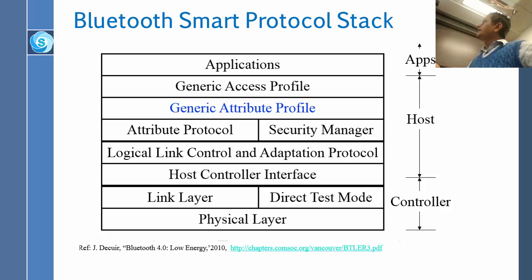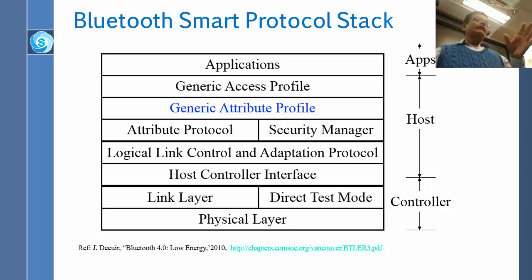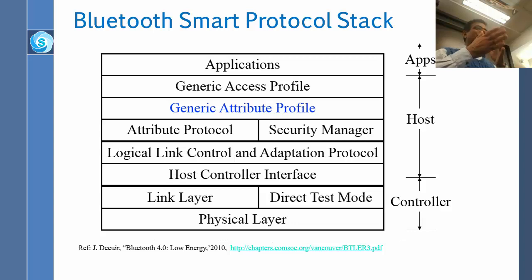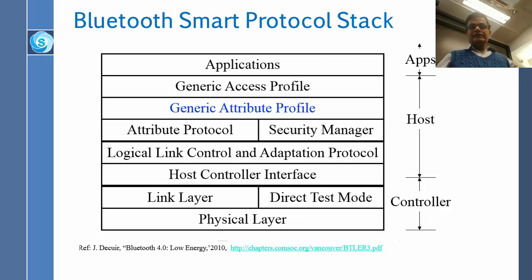The new layer here is called generic attribute profile, and that is new because previously the profiles were very, very limited. You could connect Bluetooth to maybe 15 different things because there were only 15 profiles. Now there are so many sensors of different kinds that they cannot just limit to a small number. So they have created this new profile called GATT — generic attribute profile. And then there is the generic access profile and then the application.